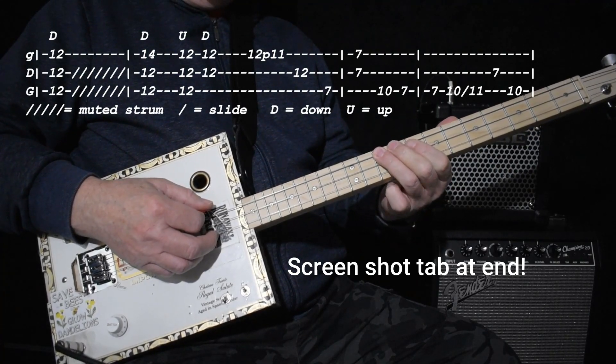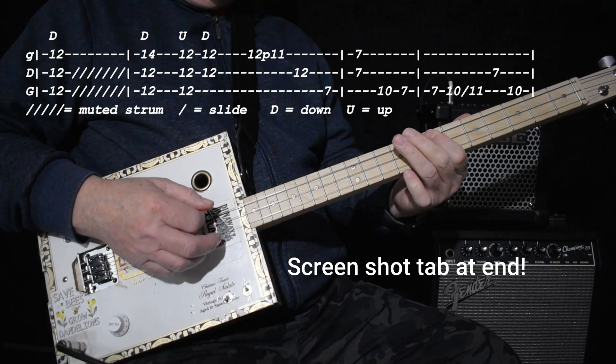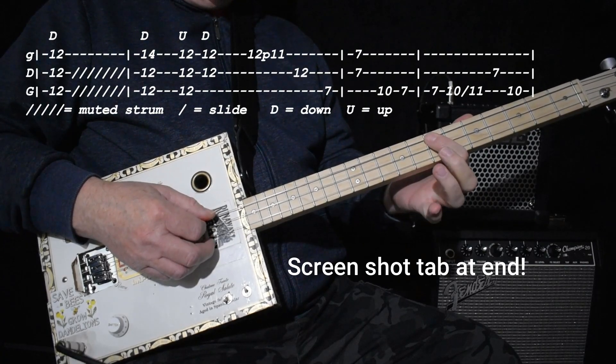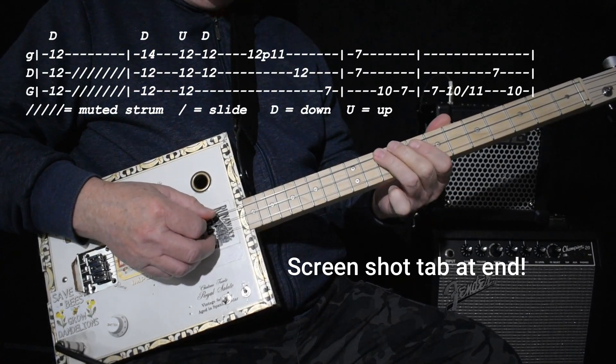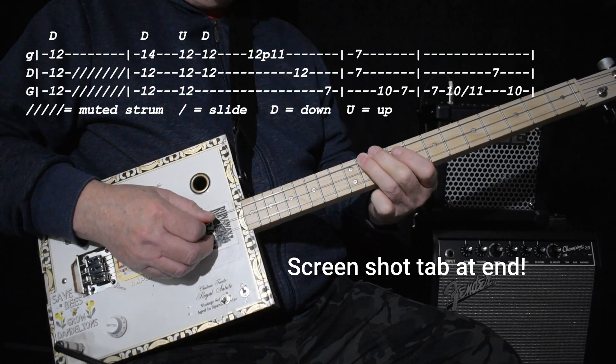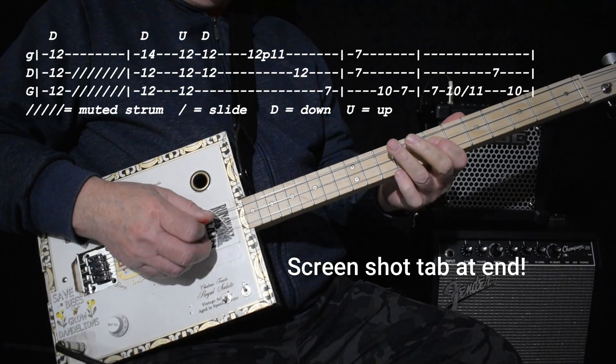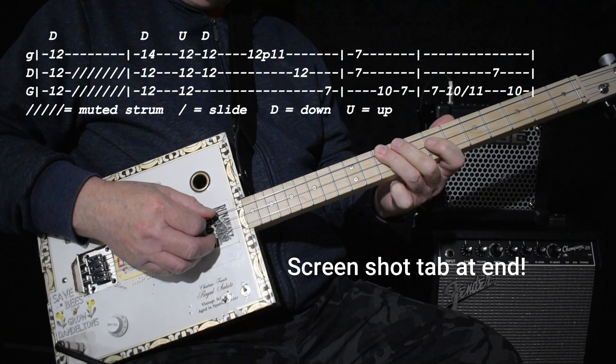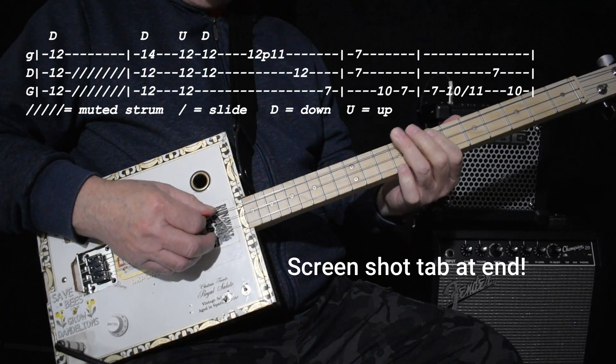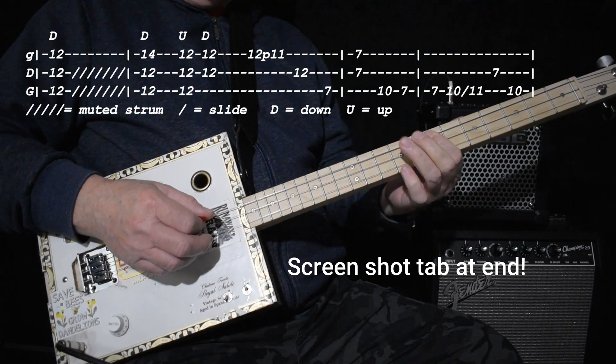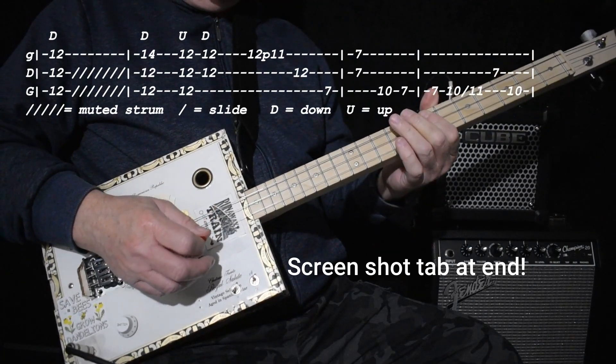Right? And there's a quick ten, seven. And then there's a lick. Seven, [plays] ten slide to 11, [plays] seven on the middle, [plays] ten on the low, seven on the low. [demonstrates]